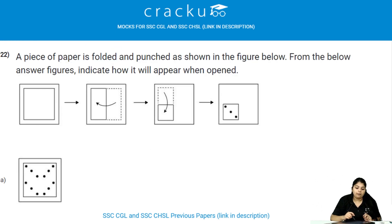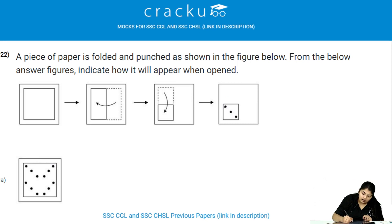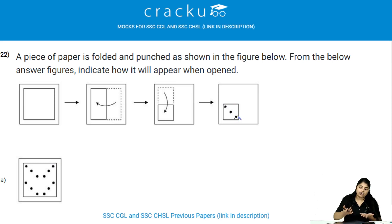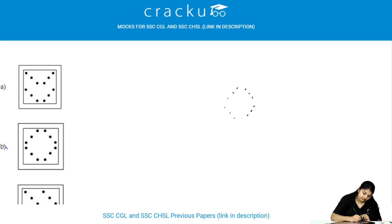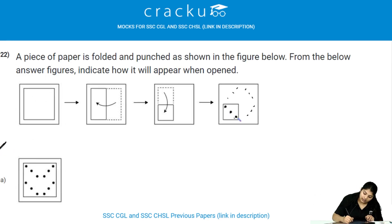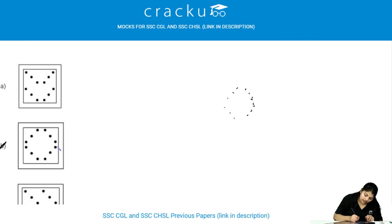A piece of paper is folded and punched as shown in the figure — indicate how it would appear when opened. The paper was punched with three holes while folded. When it is opened, the holes mirror across the fold, giving three holes here, three here, three there, and three more — the unfolded pattern is symmetric. Therefore, the answer is option B.